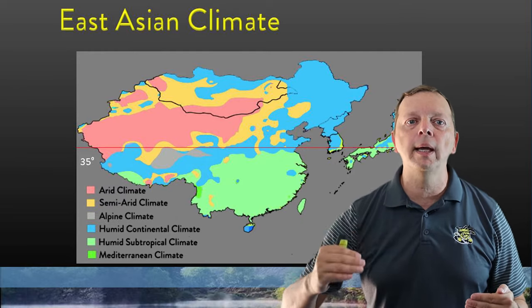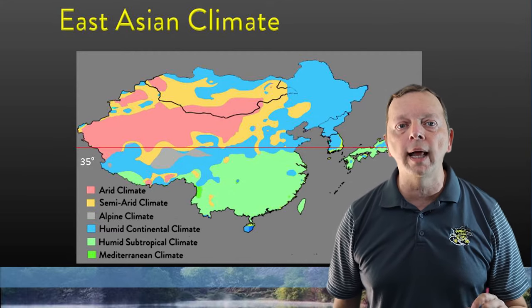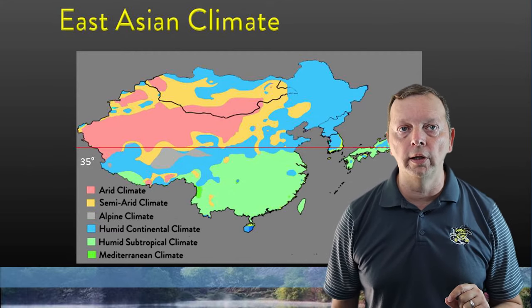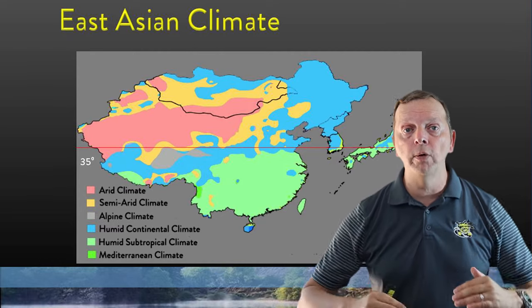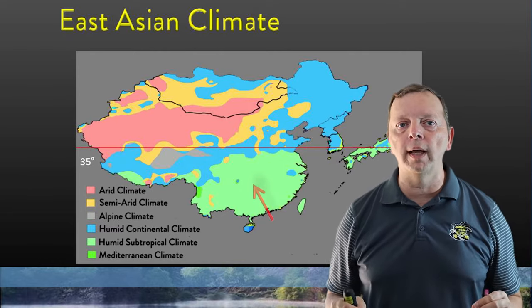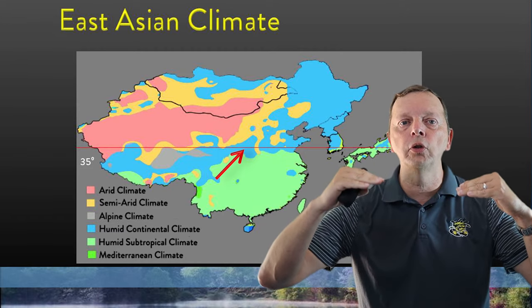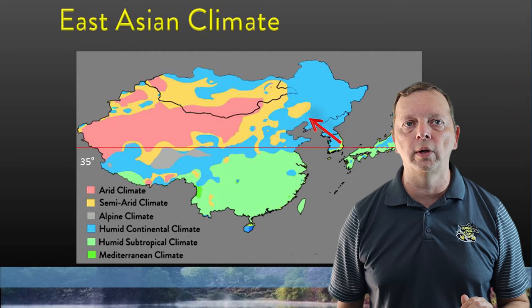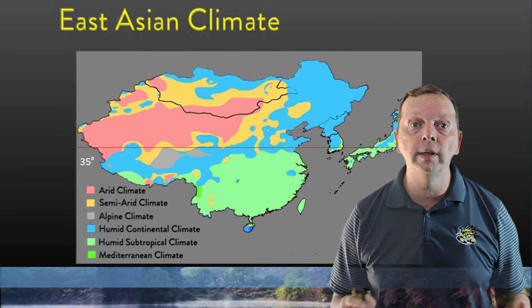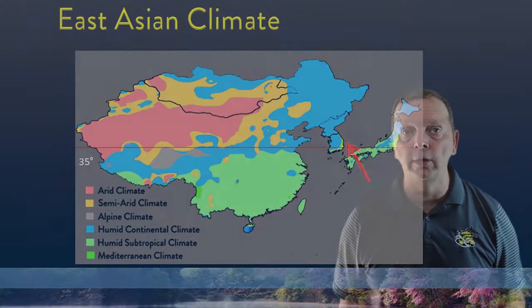Interestingly, China is at about the same latitude as the United States, so the east coast of China has a very similar climate to our own east coast. Areas in eastern China up to about 35 degrees latitude largely have a humid subtropical climate, like Texas, while north of 35 degrees we find a humid continental climate — and we see the same pattern in Korea and Japan.